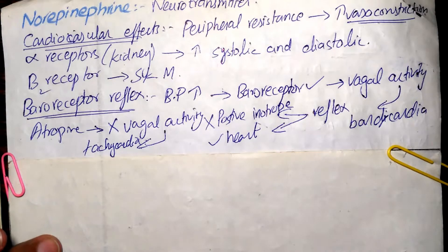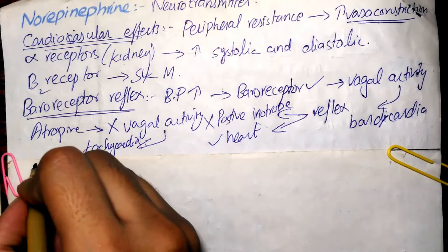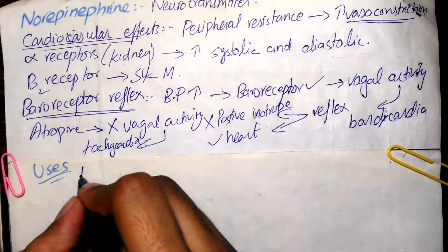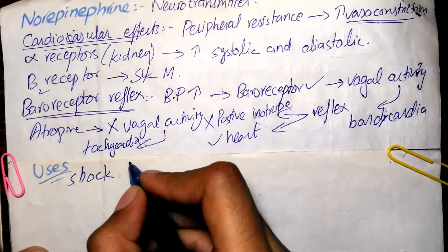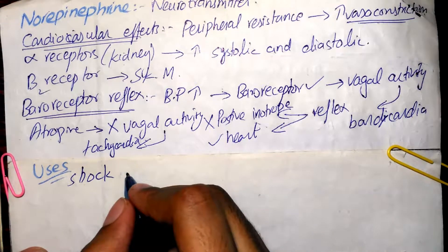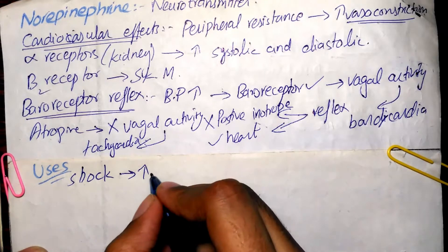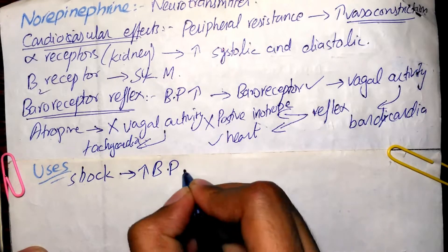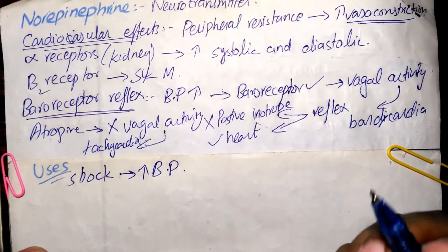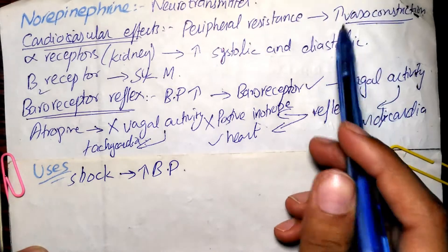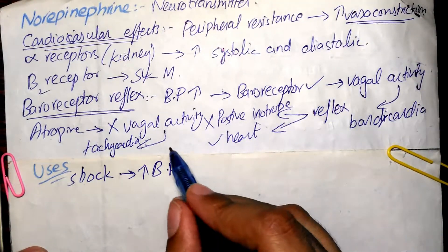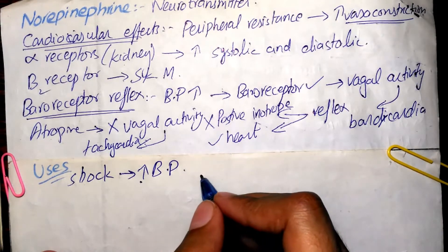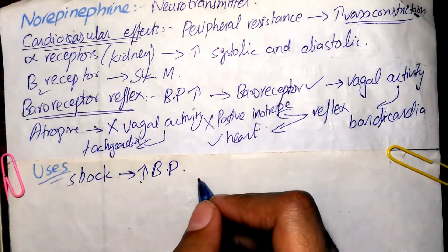Regarding therapeutic uses, norepinephrine is used in conditions such as shock, because in shock we need to increase vascular resistance and therefore blood pressure. Since this agent causes peripheral vasoconstriction and raises blood pressure, it is useful in shock. Otherwise, it is not widely used clinically.